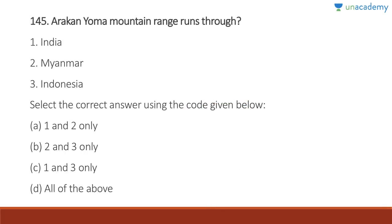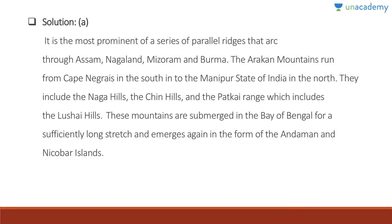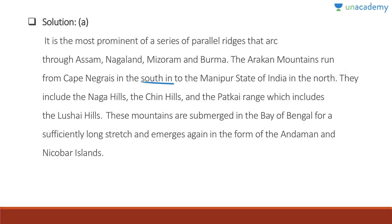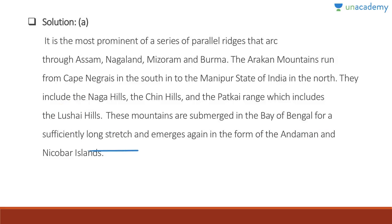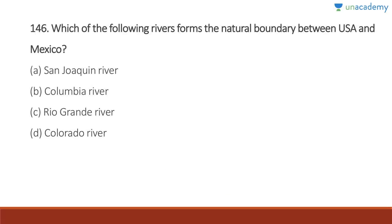Question 145: The Arakan Yoma mountain range runs through India and Myanmar — yes, but not Indonesia. Answer is A. The Arakan range is a series of parallel ridges running through Assam, Nagaland, Mizoram, and Myanmar. The range runs from Cape Negrais in the south into Manipur in the north, and includes the Naga Hills, Chin Hills, and Patkai Range including the Lushai Hills. These mountains are submerged in the Bay of Bengal and re-emerge as the Andaman and Nicobar Islands.